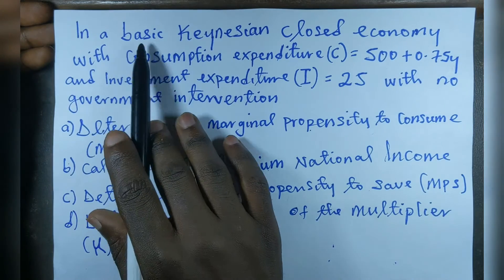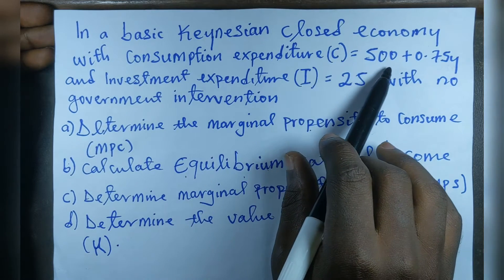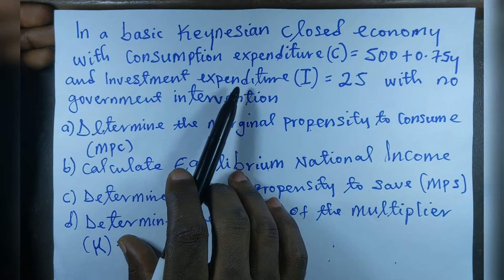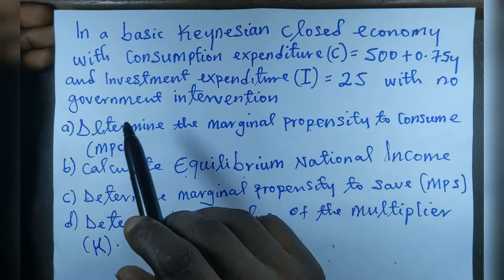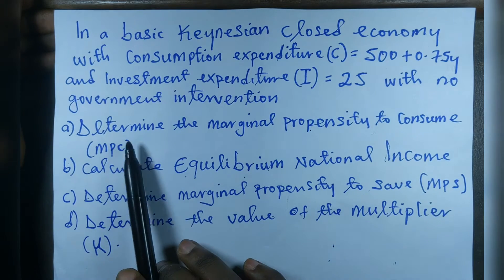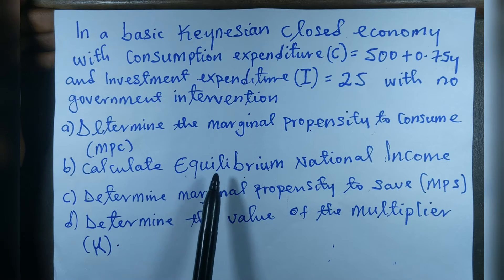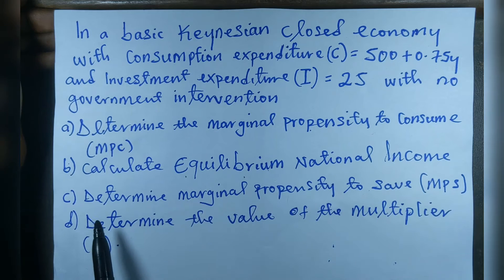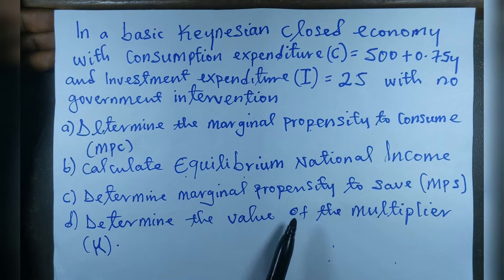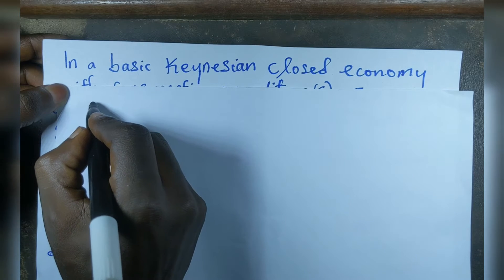Let's take this example. In a basic Keynesian or closed economy with consumption expenditure C equal to 500 plus 0.75Y and investment expenditure I equal to 25, with no government intervention. Our focus is to determine the marginal propensity to consume, the MPC, calculate the equilibrium national income, determine the marginal propensity to save, and determine the value of the multiplier.